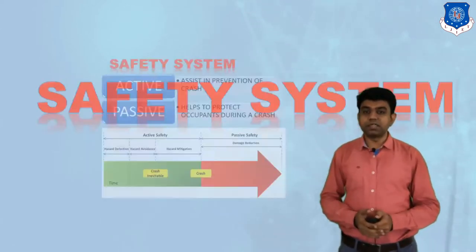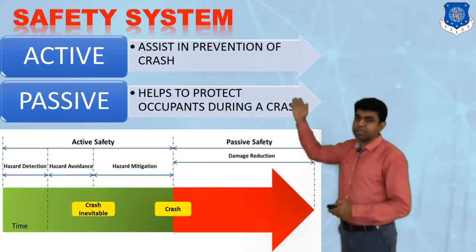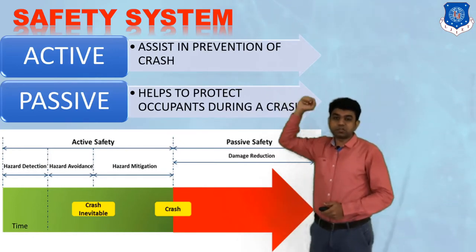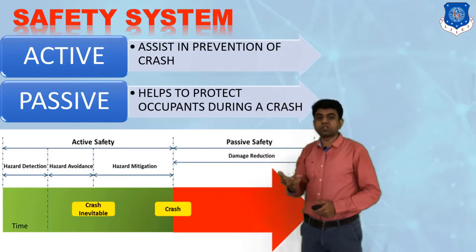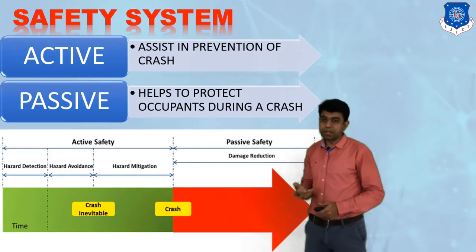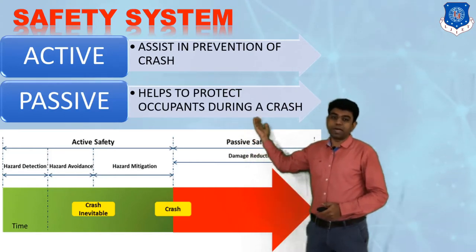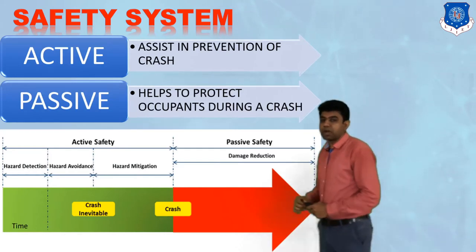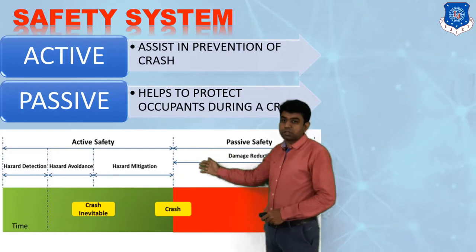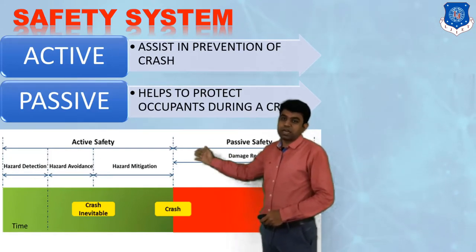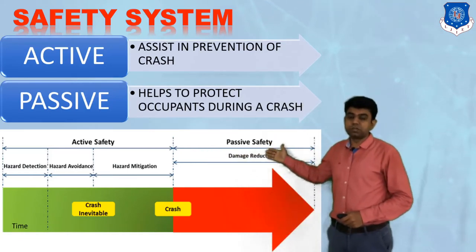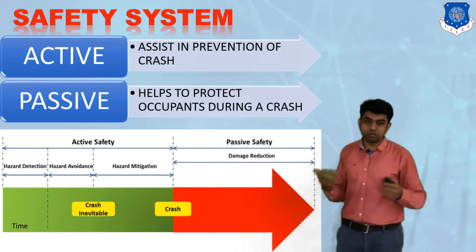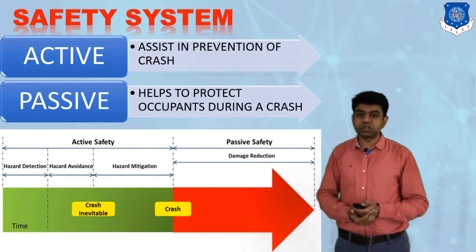The safety system of the automobile is categorized under two categories: active and passive. The active safety system assists in the prevention of a crash — it tries to prevent the accident. The passive safety system helps to protect the occupant during a crash; it tries to reduce the damage caused by the accident. The role of the active safety system covers hazard detection, hazard avoidance, and hazard mitigation.